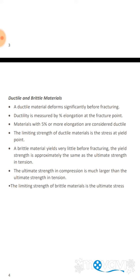The limiting strength of ductile materials is the stress at the yield point. A brittle material yields very little before fracturing. The yield strength is approximately the same as the ultimate strength in tension. The ultimate strength in compression is much larger than the ultimate strength in tension. The limiting strength of brittle materials is the ultimate stress.